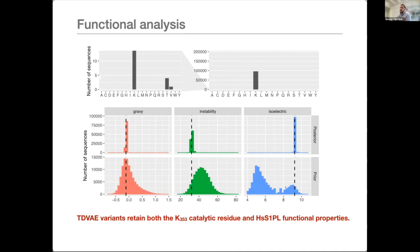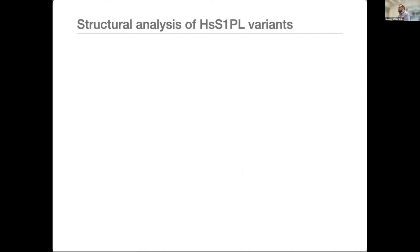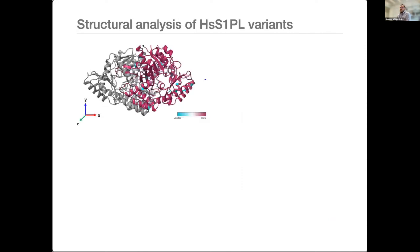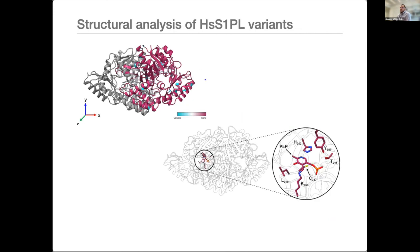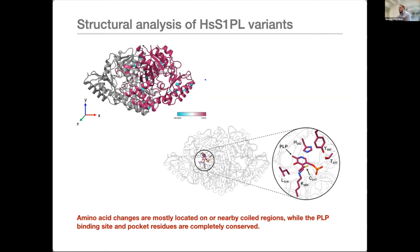Since structure is really important, Michael performed excellent structural analysis by mapping all mutations introduced by our machine learning method onto the native structure of human S1PL. We find that essentially all mutations are in or around coiled regions, while the pocket where PLP binds is very much conserved. This is reassuring — our method is learning not to touch the functional regions of the protein.